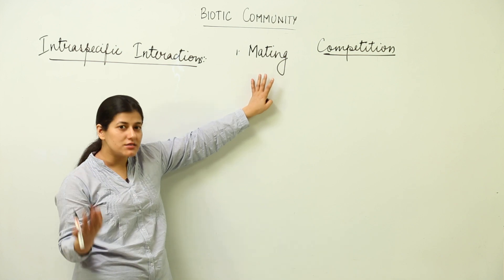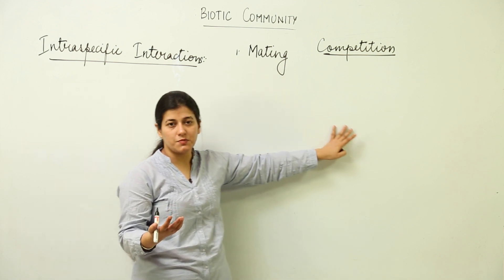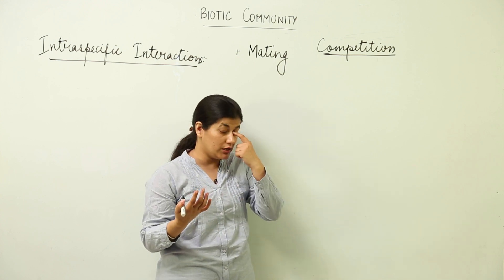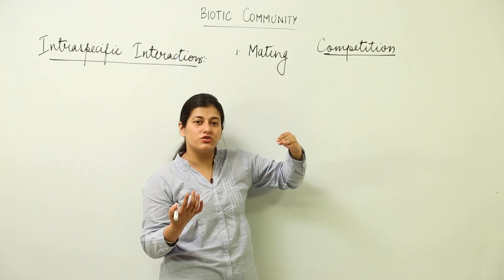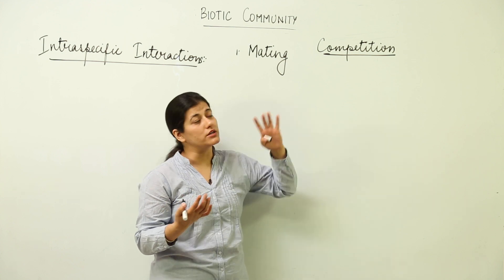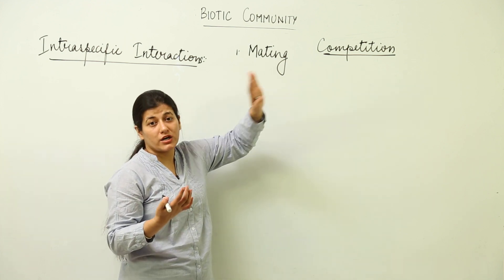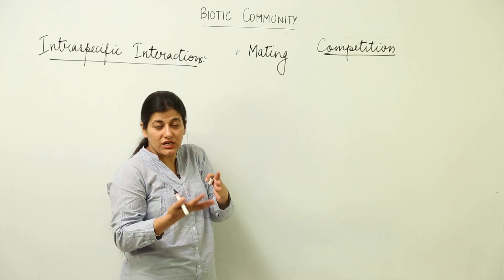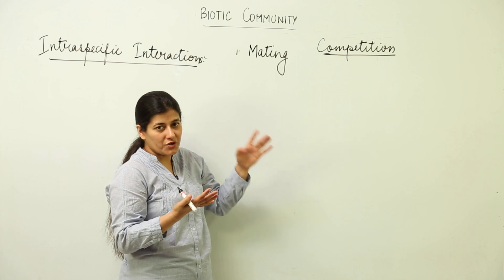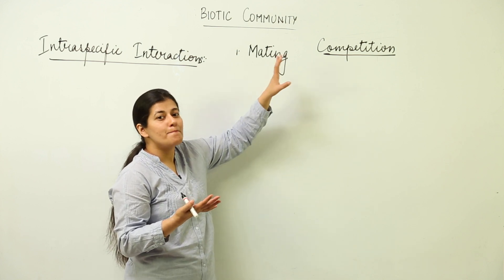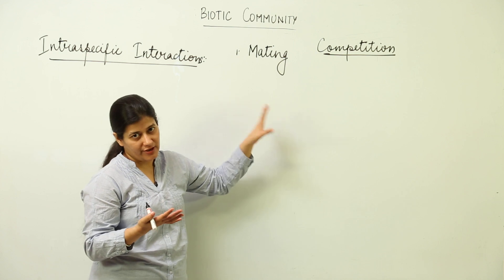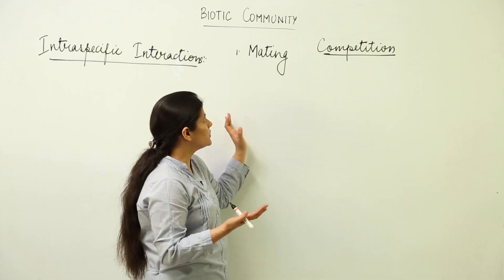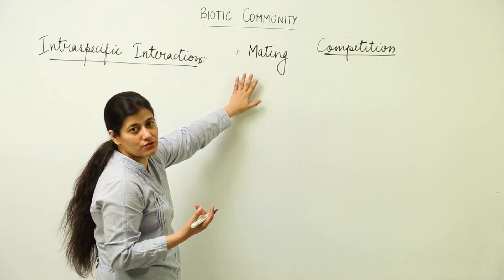There are certain species that have developed a mechanism of social living where a head is chosen, but even there, there are chances of competition where two organisms belonging to the same species fight within themselves in order to portray themselves as the best candidate for the female to mate with. So that is one intraspecific interaction — mating.